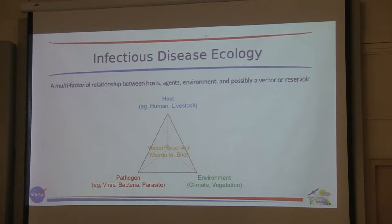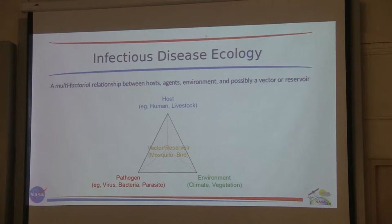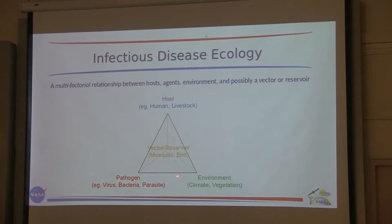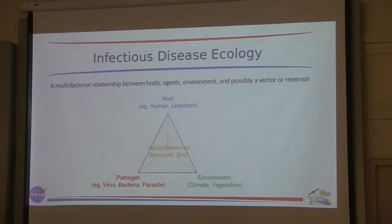The epidemiological triangle of disease — sometimes thought of as a pyramid — shows the relationship between the pathogen, the host (human or livestock), and the environment. In some cases you also have a reservoir or vector. For malaria, the host is often humans, the pathogen is Plasmodium, and the environment affects both the pathogen developing in the mosquito and the mosquito itself. The mosquito interacts with the person by biting them, transmits the pathogen, and is also affected by environmental conditions.